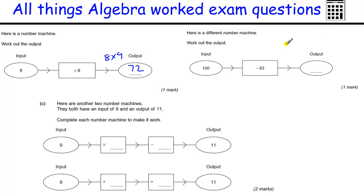Don't forget, if it's a calculator-based question, obviously use your calculator to help you get the right answers. This function machine is take away 83, so 100 take away 83 is going to be 17.